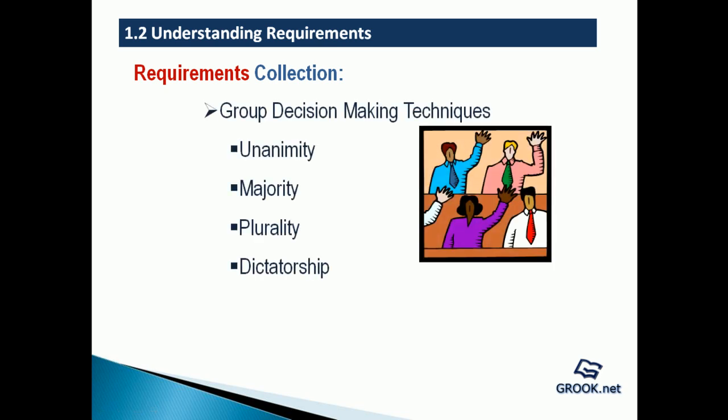Group decision-making techniques are used for assessment and prioritization when there are multiple alternatives. These include: unanimity, where everyone agrees to one path; majority, where more than 50% of people agree; plurality, where there is no clear majority and the decision of the largest block of people is agreed upon; and dictatorship, where one person decides for the entire group.